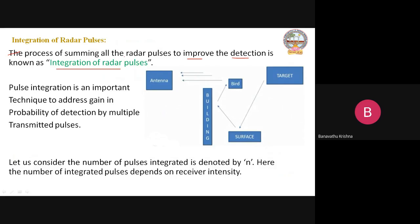So based on which concept is the detection improved? Here, summing all the radar pulses. The radar pulses are nothing but reflected pulses from the target. Whenever we are transmitting the signal into the space, those signals reach the target and are reflected back to the radar receiver station. Generally, the echo signals are received at the radar receiver station having very, very less amount of power. So apart from that, you cannot be able to identify whether the target is available or not. So you have to combine all the signals and integrate them.